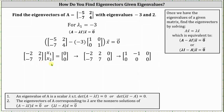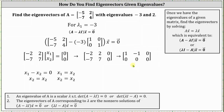The first row of the corresponding augmented matrix is negative two, two, zero, and the second row is negative seven, seven, zero. Writing the augmented matrix in reduced row echelon form, notice how there's no pivot in column two, which means x2 is a free variable.